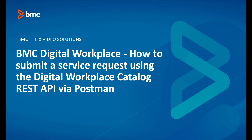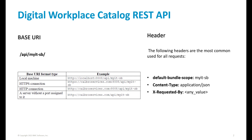Hello everyone. In this video, I will show you how to submit a service request using the VMC Digital Workplace Catalog REST API via Postman. The Digital Workplace Catalog REST API follows the REST architectural style, so resources, HTTP verbs, and status codes are used. JSON is used for requests and response bodies. The shown base URI is used for calling the VMC Digital Workplace Catalog server.